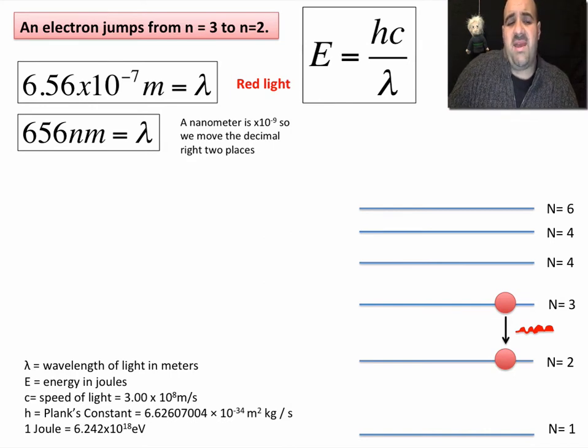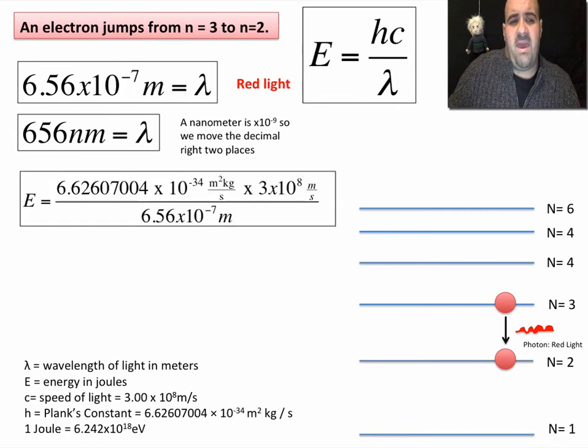Our next step is to calculate the energy of this photon of light. We're going to use this formula. Energy equals hc over lambda. And we have two constants here. This is the Planck's constant. This is the speed of light. These numbers are not changing in any case.